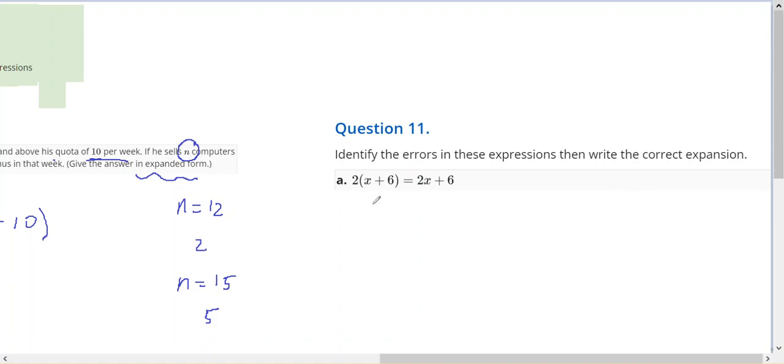2x plus 6 is not this answer. The error was only multiplying x by 2, not the 6 by 2. Therefore, the correct answer is 2x plus 12, which does not equal 2x plus 6.